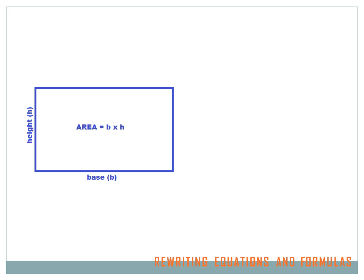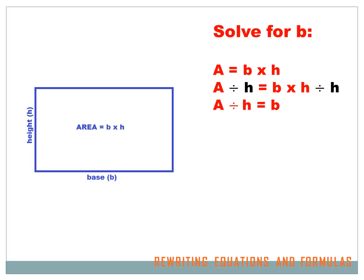Let's look at a practical example. We've got a rectangle, and we know that the area of the rectangle equals the base times the height — base is b, height is h. Let's say we want to solve for b — figure out what b is in terms of the height and the area. We know area equals base times height, and I'm trying to isolate b. So I've got to get rid of this times h. To get rid of a times h, I divide by h, and I have to do that on both sides. The h's cancel each other out, leaving just b on the right side. The left side is the area divided by the height. So the base equals the area divided by the height.